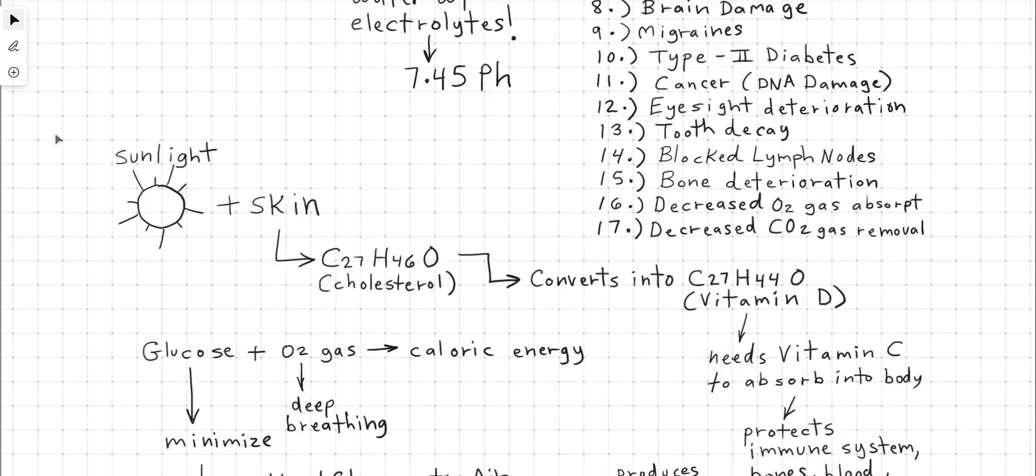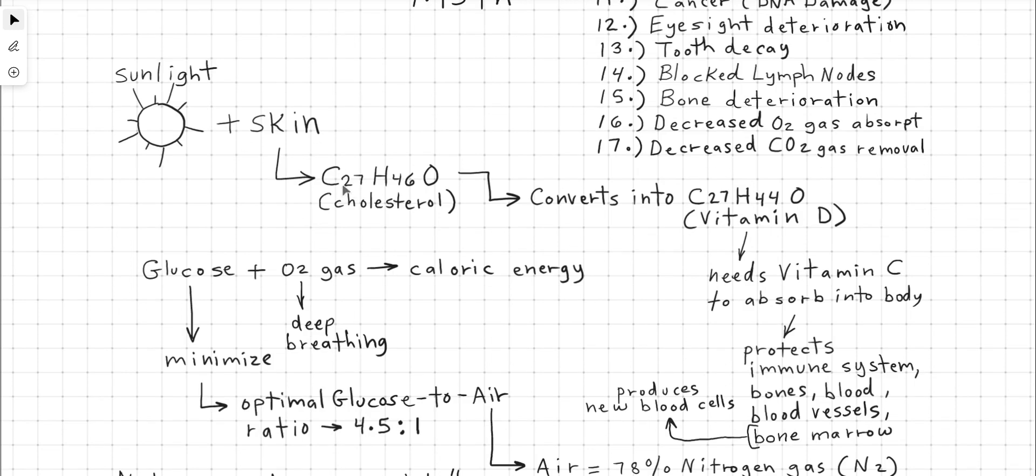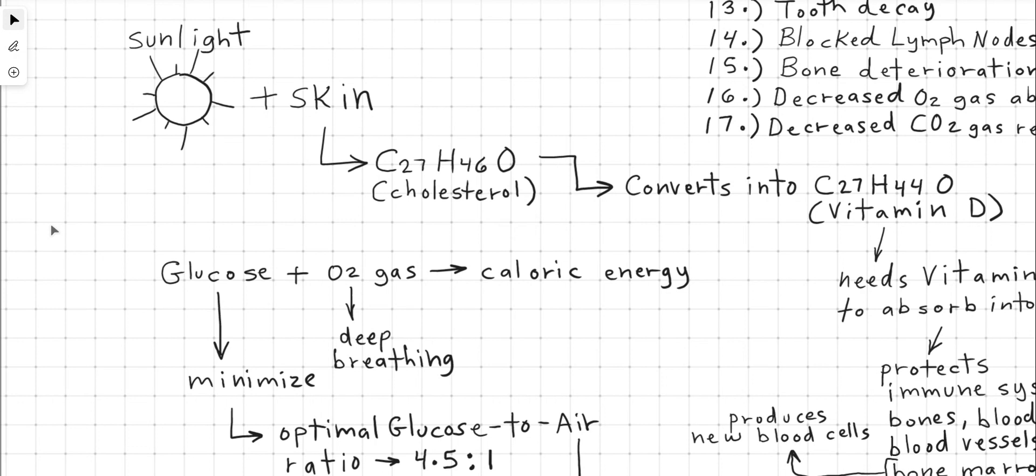Next we have sunlight plus skin. Skin is the largest organ in the body. We focus on this molecular compound here, C27H4601. This is the chemical formula for cholesterol. When cholesterol absorbs electrons from the sun through the photoelectric effect, grounding into the skin, it then causes two hydrogen atoms to dissociate from the cholesterol molecule and then convert into vitamin D. So you don't get vitamin D directly from the sunlight. You get vitamin D when the sunlight electrons ground into your skin and then they absorb into your bloodstream and then cause two hydrogen atoms to dissociate converting the cholesterol molecule into the vitamin D molecule.